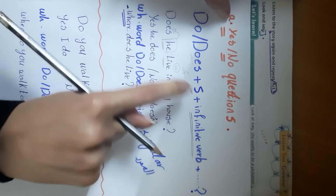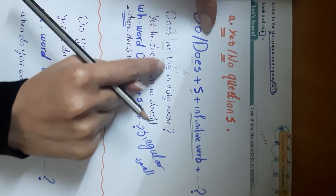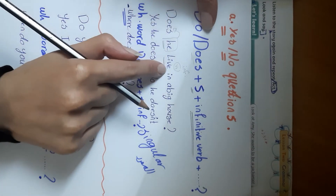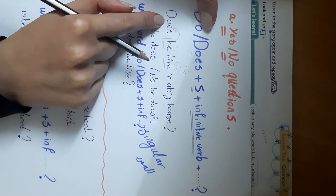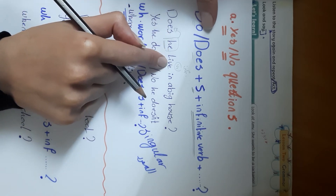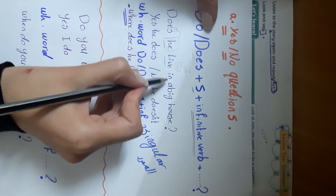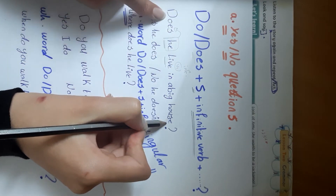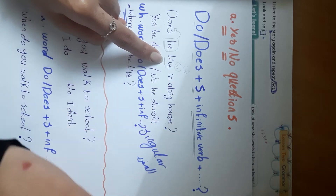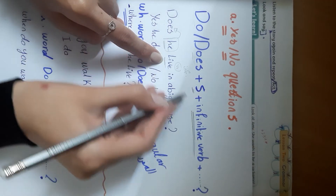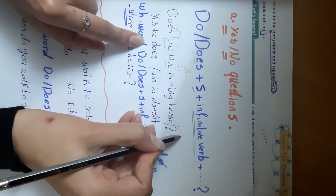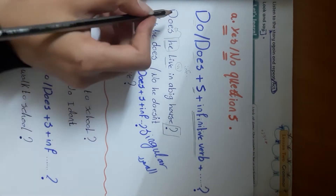The verb stays in the infinitive — no -es added — because we already used 'does.' When we use 'does,' the main verb stays in its base form. So: 'Does he live in a big house?' — verb is base form 'live,' and don't forget the question mark.